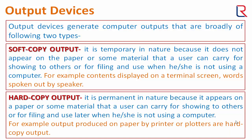Hard copy output is permanent in nature because it appears on paper or some material that a user can carry for showing to others or for filing and use later when not using a computer. For example, output produced on paper by a printer or plotter is hard copy output.